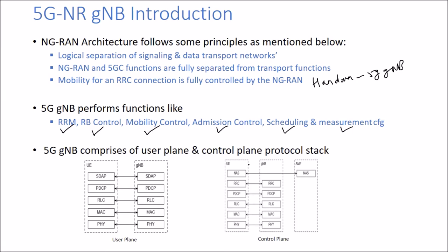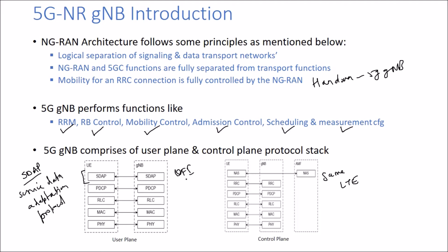The 5G GNodeB comprises a user plane and control plane protocol stack. The control plane protocol stack is just the same as in our LTE network. But in the user plane, we have a new protocol sublayer called SDAP — Service Data Adaptation Protocol. This new sublayer in 5G NR is responsible for mapping between a QoS flow and a data radio bearer. It also marks a Quality of Service Flow ID, called QFI, in both uplink and downlink packets.